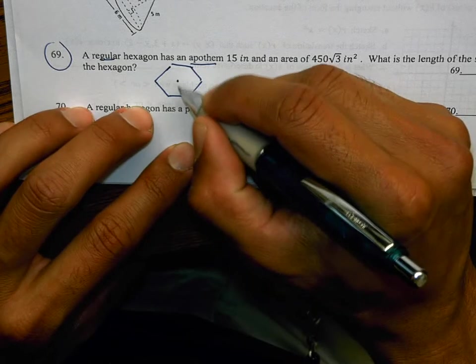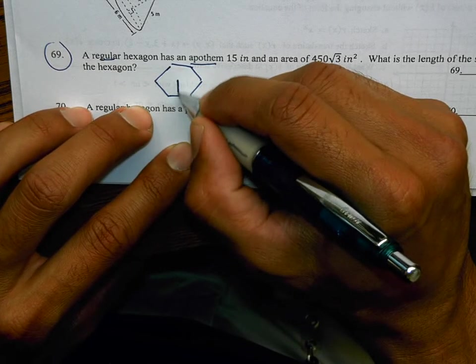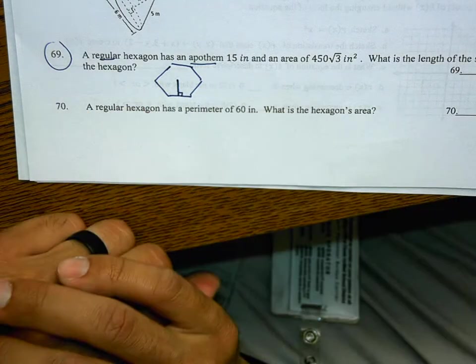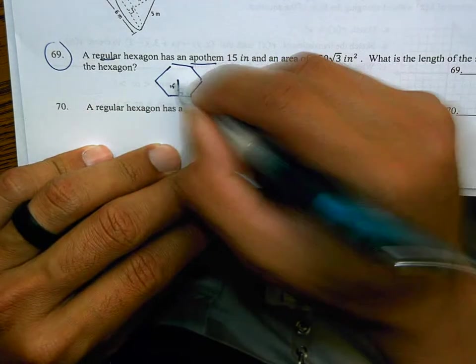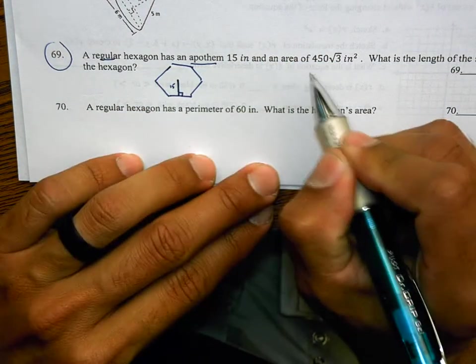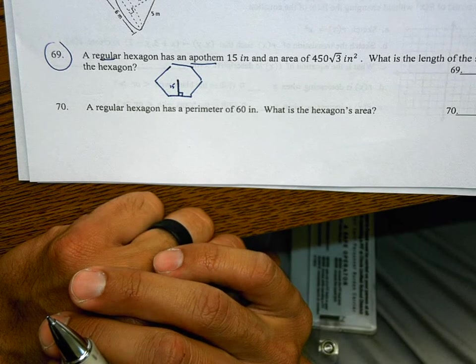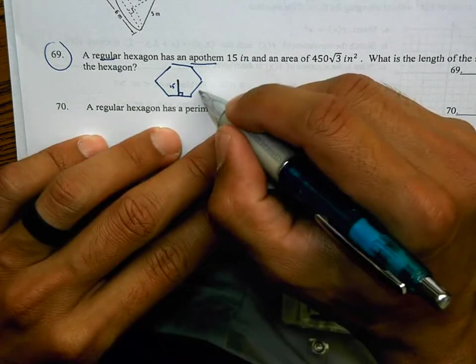The apothem is the distance from the center perpendicular to a side. This is 15, and it has an area of 450√3 inches squared. And they want you to figure out what is the side length.